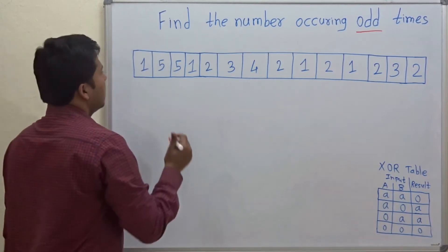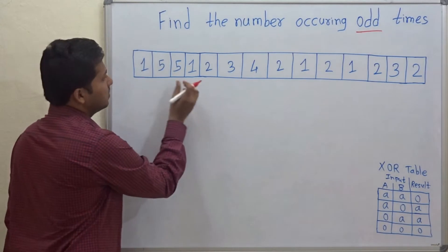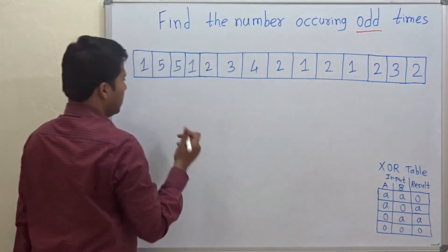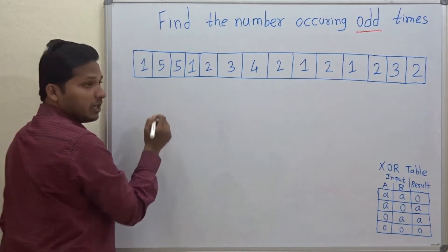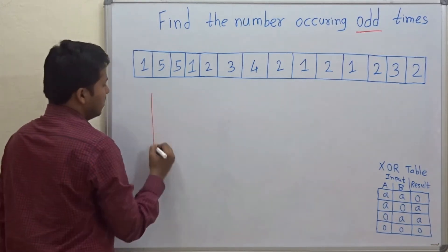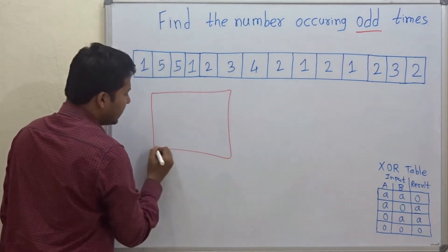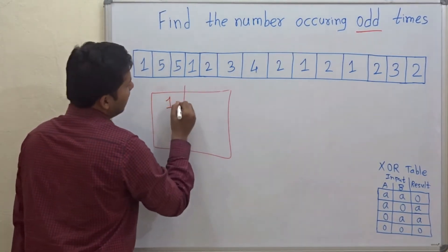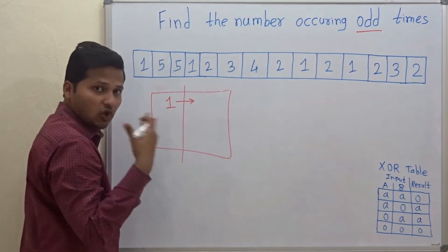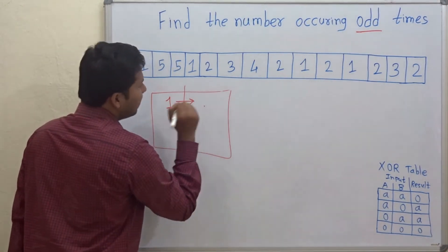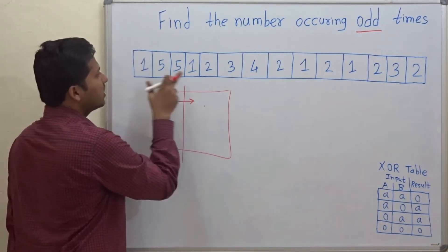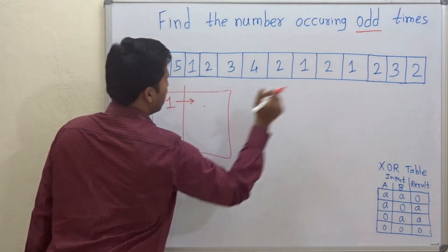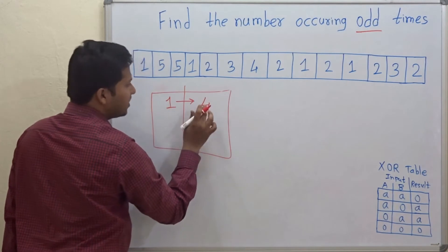One method is that you have to count the number of times each number occurs. For example, you can make a hash table where the key is the number and the value is how many times it is occurring. So, 1 is occurring 4 times.